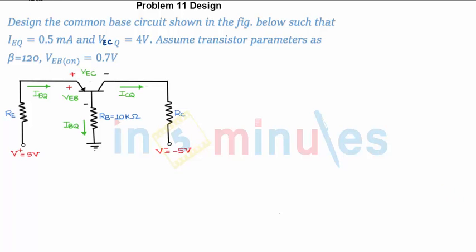Hello, welcome to In Five Minutes. The next topic consists of the PNP transistor in common base configuration. Common base means the base is common to emitter and collector. How to identify which type of transistor? The arrow is always from P to N, so it is nothing but a PNP transistor.